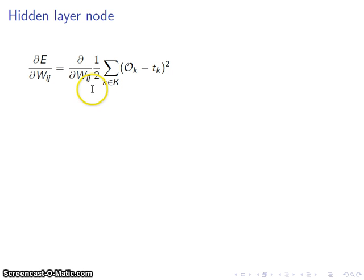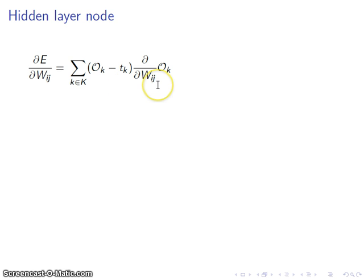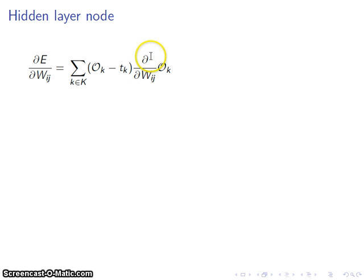So let's go ahead and compute this derivative. Similarly, we're going to use the power rule, bring this two down, and then the chain rule to compute the derivative of the inside. We're free to pass this derivative inside the sum — it's finite, that's not a problem. We end up with the sum across all the output nodes — left over from the power rule — times the derivative with respect to the weight from i to j of the inside.